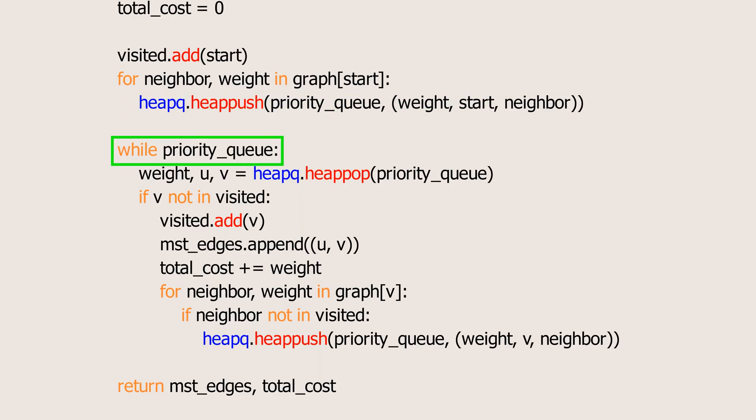As long as the priority queue is not empty, we pop the element with the lowest weight and check if the node is already in the visited set. If not, we add it to the visited set, add the edge to the minimum spanning tree, update the total cost, and push all the edges connected to the current node onto the priority queue.